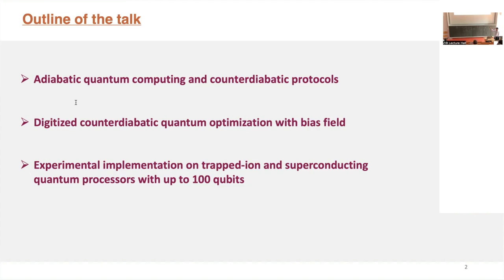I will talk about what the counter-diabatic protocol is, and I will discuss a special technique called digitized counter-diabatic quantum optimization using the bias field. Finally, I will show some experimental results with a trapped-ion quantum system with 36 fully connected qubits, and some experiments with up to 100 qubits for spin glass problems.